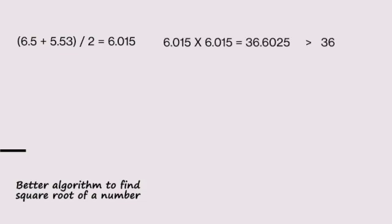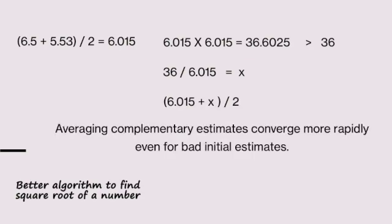Average we get 6.015. 6.015 squared is 36.18, it is greater than 36. 6.015 is the complementary estimate. We continue averaging. The averaging of complementary estimates converges more rapidly even for bad initial estimates. The convergence is faster, it is better than the first method.